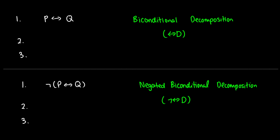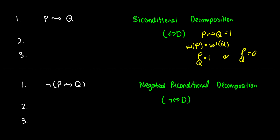Let's talk about the rules for the biconditional. When is P if and only if Q true? This is true if the value of P is the same as the value of Q — so either P and Q both equal 1, or P and Q both equal 0, which is another way of saying not P and not Q are both 1. So when we apply our rule, we get two branching paths: one case with P and Q both true, and one case with not P and not Q both true. We justify this from line one as biconditional decomposition.